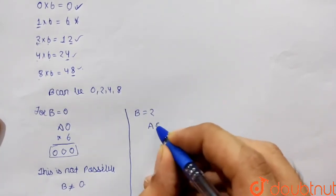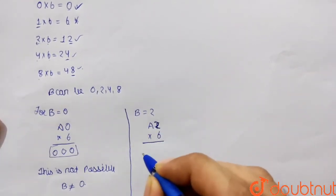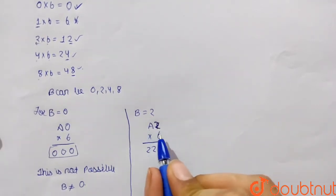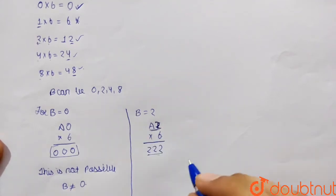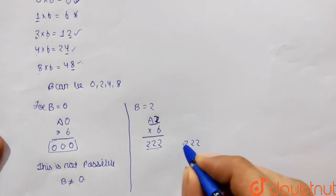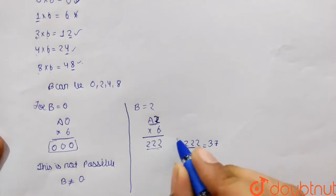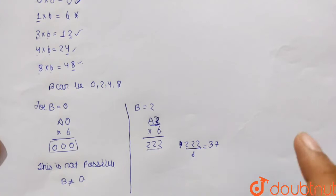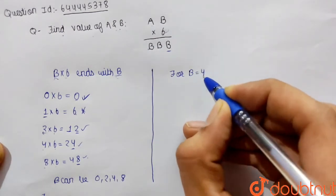Now let's check for b equals 2. The condition becomes A2 multiplied by 6 equals 222. To find A2, we divide 222 by 6, which gives 37. But 37 has a units digit of 7, not 2, so this is also not possible.